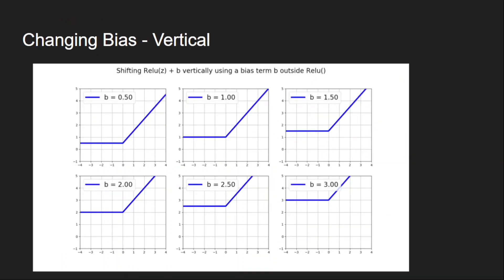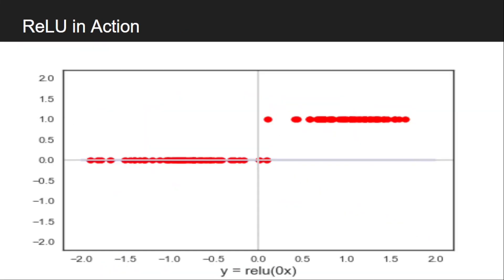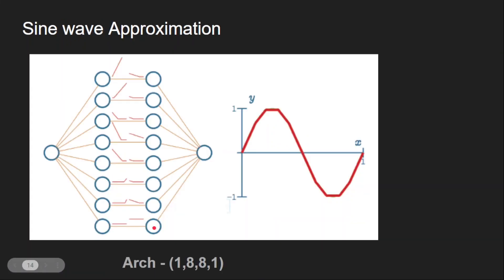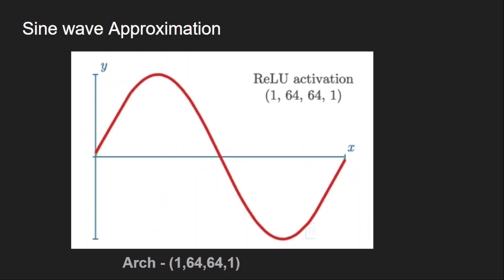Now using all these combinations of values, we can understand that we can approximate the sine wave also using the ReLU like this. This is a simple network with two hidden layers of eight neurons each, and it is able to approximate the sine wave pretty fine. And if we increase the number of neurons to 64, it fits the wave perfectly. This indicates that the ReLU can be used to approximate any non-linear function.